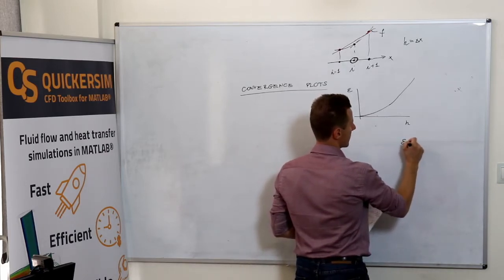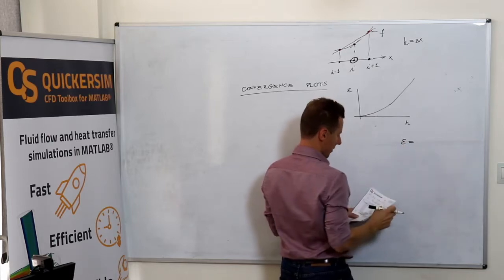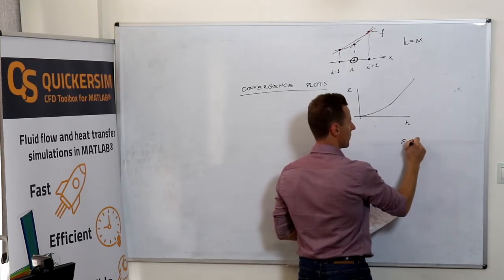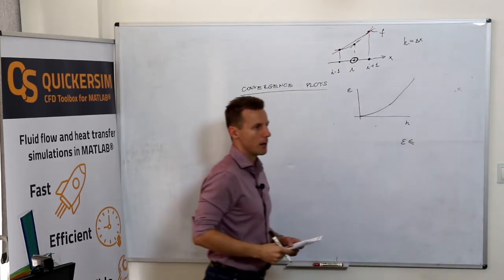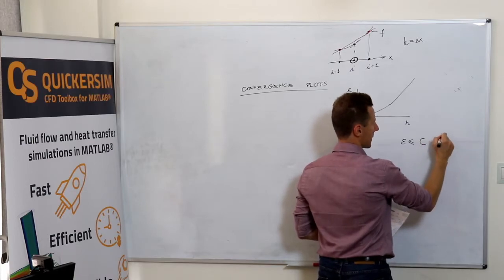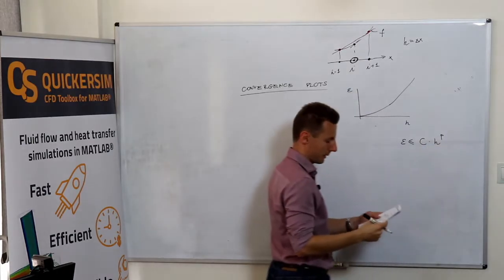Basically, it's said that epsilon should not be larger than some constant, some constant C times H to the power of P.